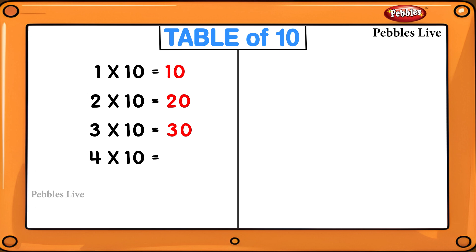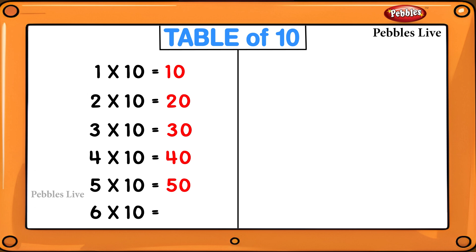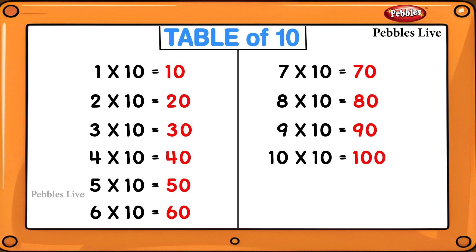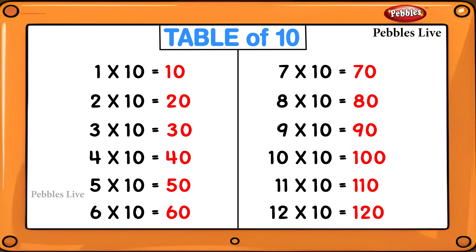1 tens are 10, 2 tens are 20, 3 tens are 30, 4 tens are 40, 5 tens are 50, 6 tens are 60, 7 tens are 70, 8 tens are 80, 9 tens are 90, 10 tens are 100, 11 tens are 110, 12 tens are 120.